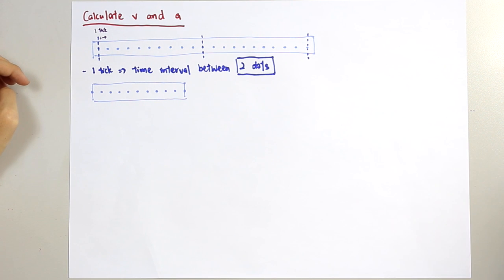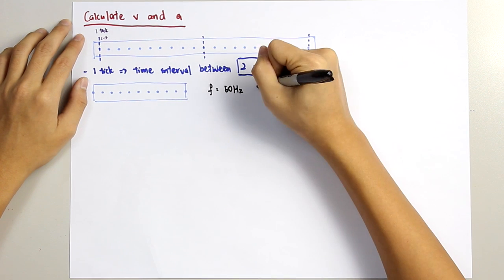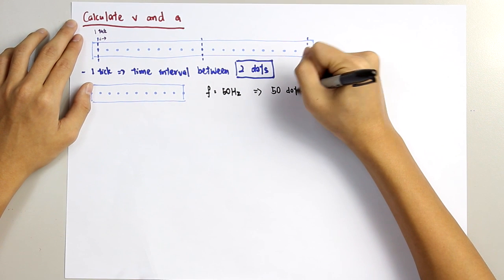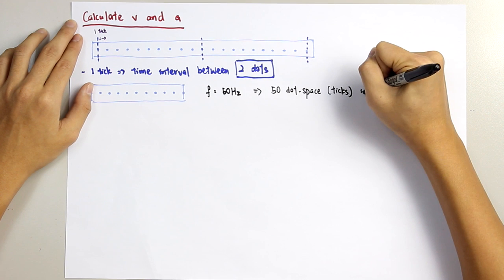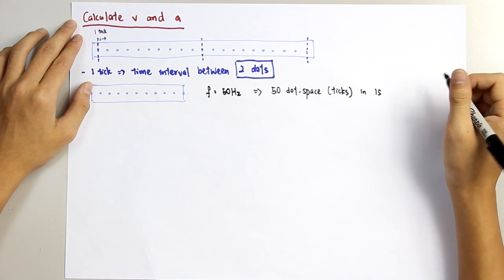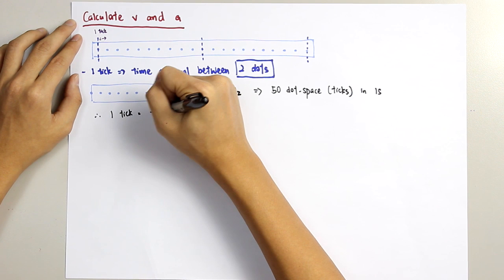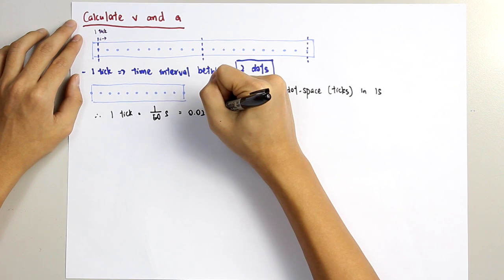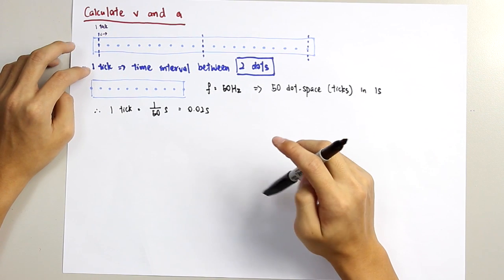Since we set the frequency of the vibrating pin to 50 hertz, it means the pin marks 50 dots — also known as ticks — within one second. Therefore, one tick equals 1/50 seconds, which is 0.02 seconds. So the period for each tick is 0.02 seconds.